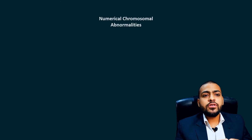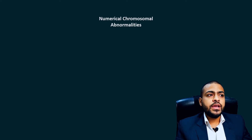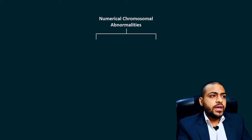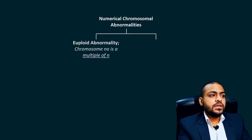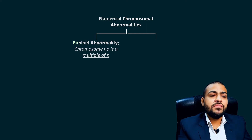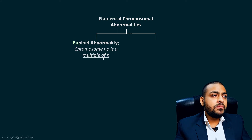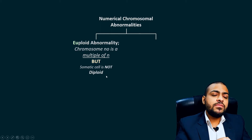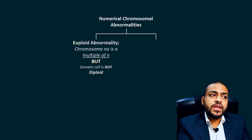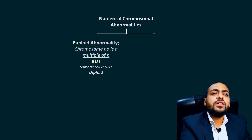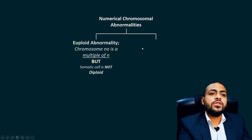Now let's talk about numerical chromosomal abnormalities, or numerical chromosomal aberrations. We will classify them logically so it will be easy to understand. These can be of two types. The first is euploid abnormality, in which the chromosome number is a multiple of n. Although the chromosome number is a multiple of n, the somatic cell is not diploid — since human somatic cells must normally be diploid, being something other than diploid (while still a multiple of n) is a euploid type of chromosomal abnormality.